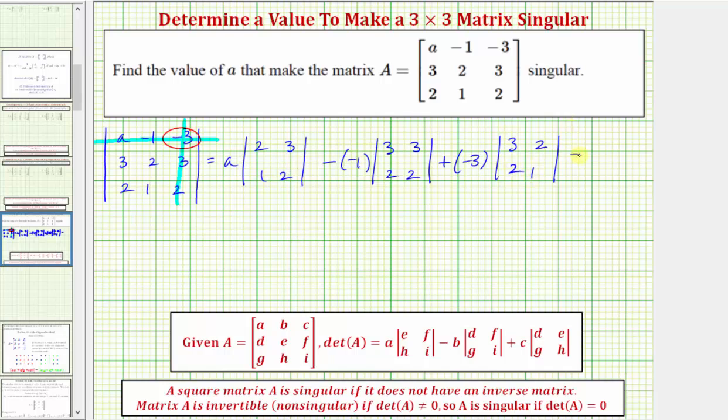And this must be equal to zero if we want matrix A to be singular. Now to evaluate each two by two determinant, we'll find this product minus this product.